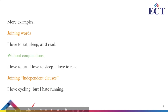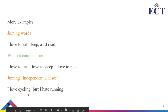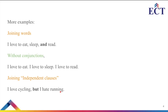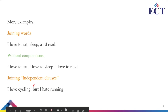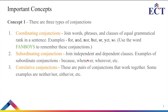For example, 'I love cycling' is an independent clause. Similarly, 'I hate running' is another independent clause. When you combine both, you add a conjunction. So conjunctions help you write complex and informative sentences.